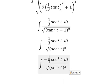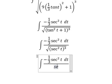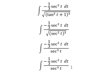The square root and the power of 3 gives us 3 over 2. This becomes sec of t.